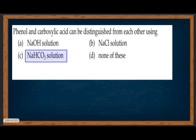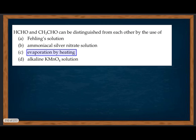Phenol and carboxylic acid can be distinguished from each other by using Na₂CO₃ solution. Carboxylic acids liberate CO₂ with Na₂CO₃, while phenol does not. They can also be distinguished by evaporation by heating.